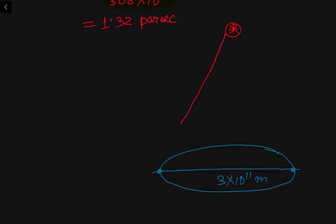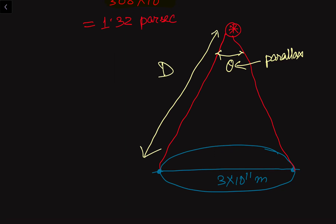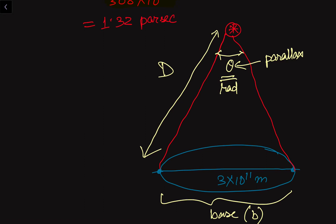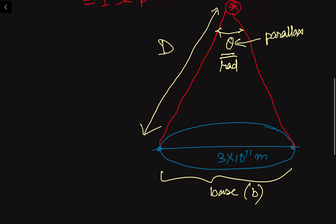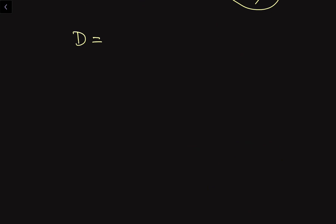We join the star to both positions of the Earth with straight lines and find the angle theta between them — this angle is the parallax angle. From the previous theory part of this tutorial series, we defined this distance as D, the baseline as small b, and theta is in radians. The parallax angle theta gives the relation between these quantities.